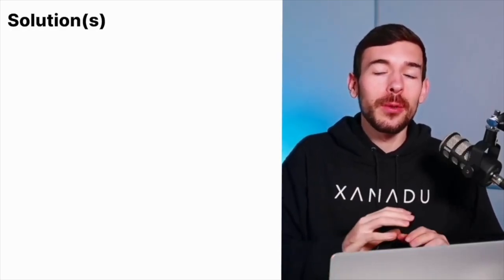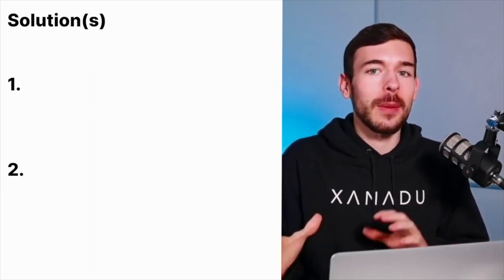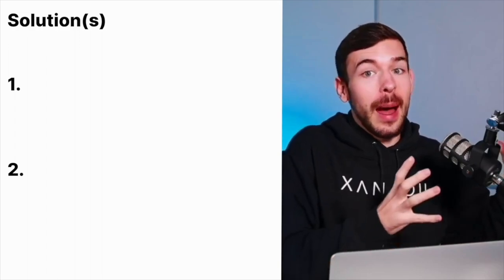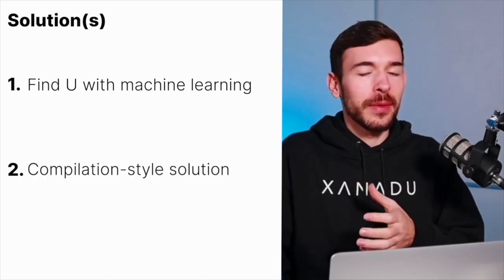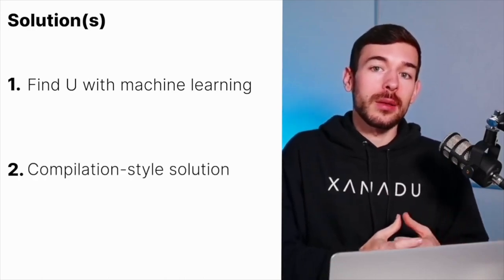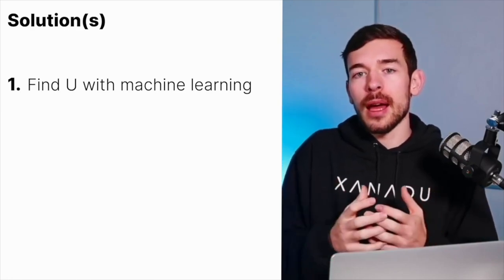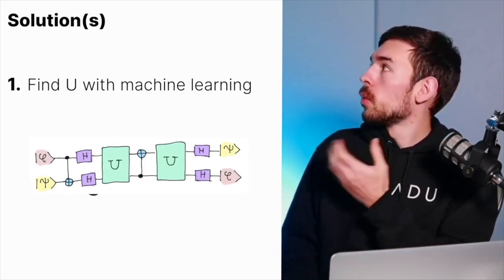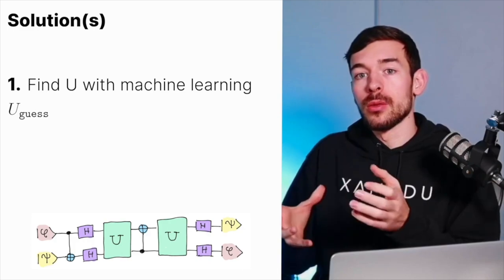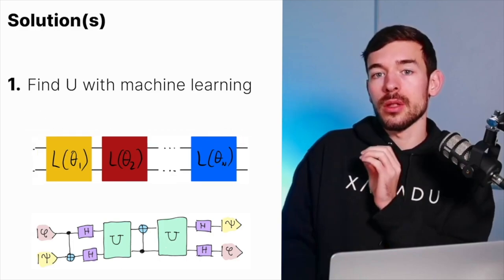When we ask this question to our candidates, we usually have two very different solutions, and it's something useful to check what is the background of that person. We can get like a machine learning style solution and a compilation style. The machine learning one is probably the most common to find and used to give an initial guess of how this U gate is going to be. So for example, we create an initial variational circuit that depends on some parameters that we are going to introduce in the template.